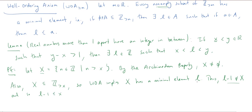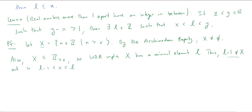Also, because little l is an element of big X, little l must be greater than x. So x lies between l minus 1 and l, strictly on the top side. If I add 1 to everything: l minus 1 plus 1 is l, and x becomes x plus 1, giving l is less than or equal to x plus 1. And I already know that little l is greater than x.